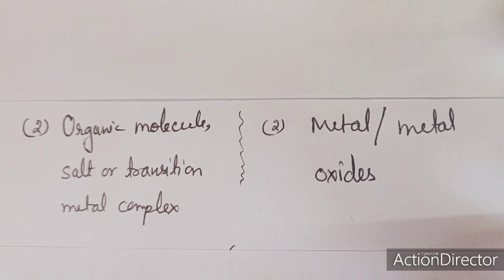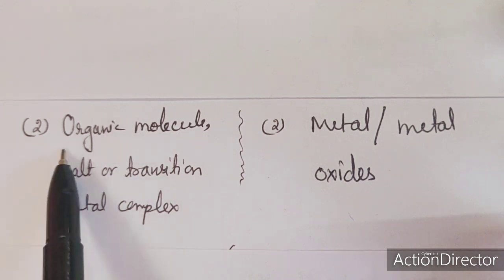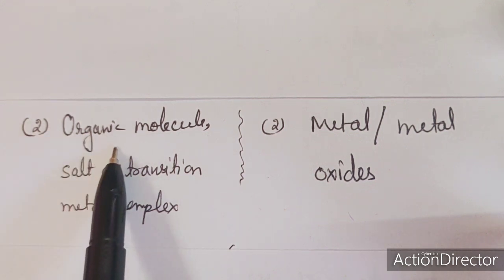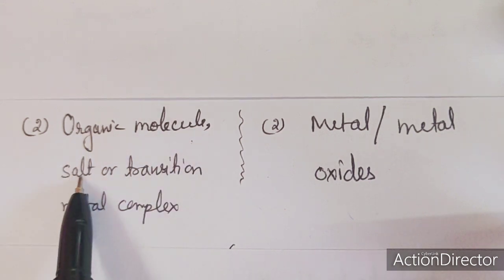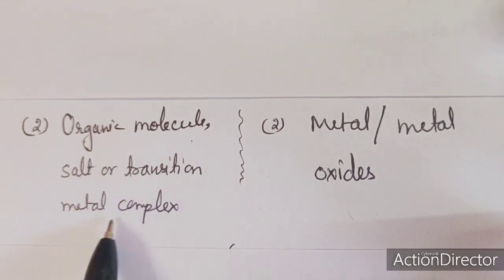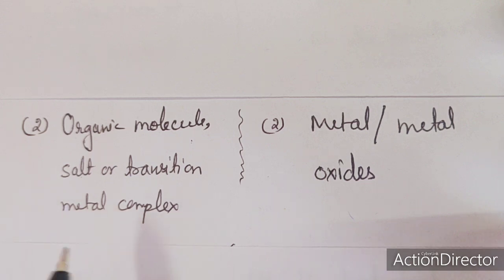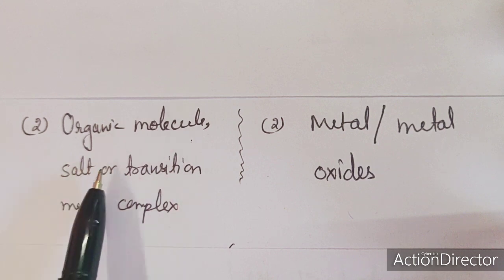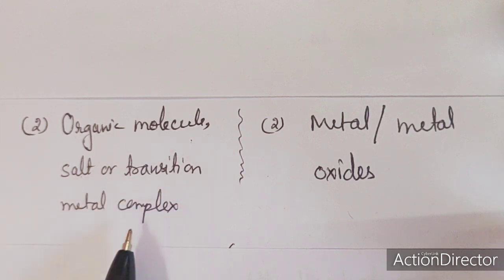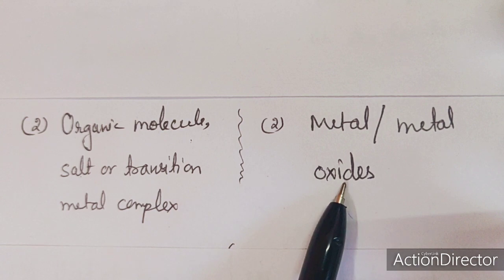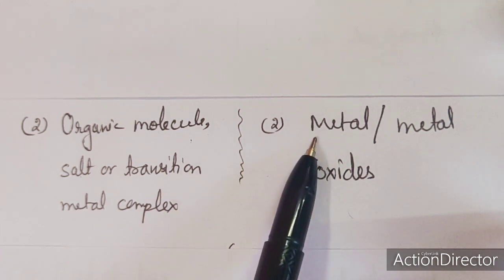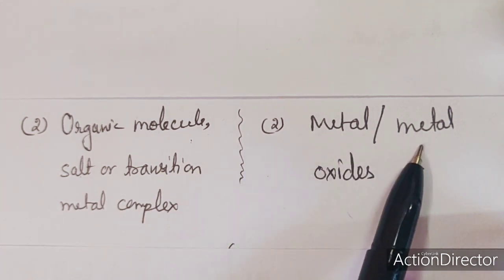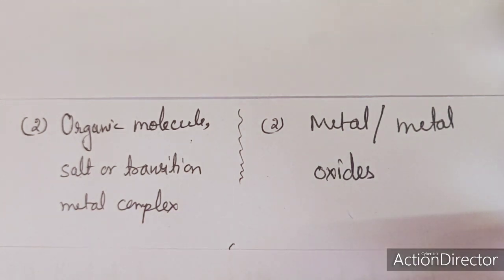The second point of difference: homogeneous catalysts are generally organic molecules, they may be salts, or they may be transition metal complexes. Heterogeneous catalysts are generally metals or they may be metal oxides.